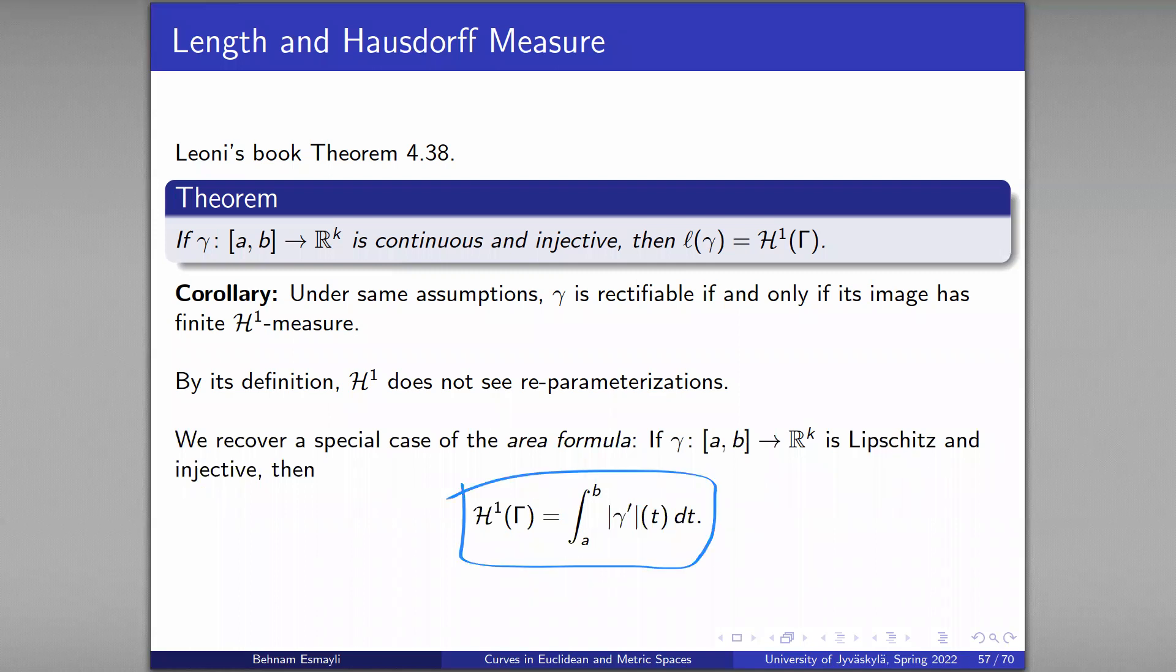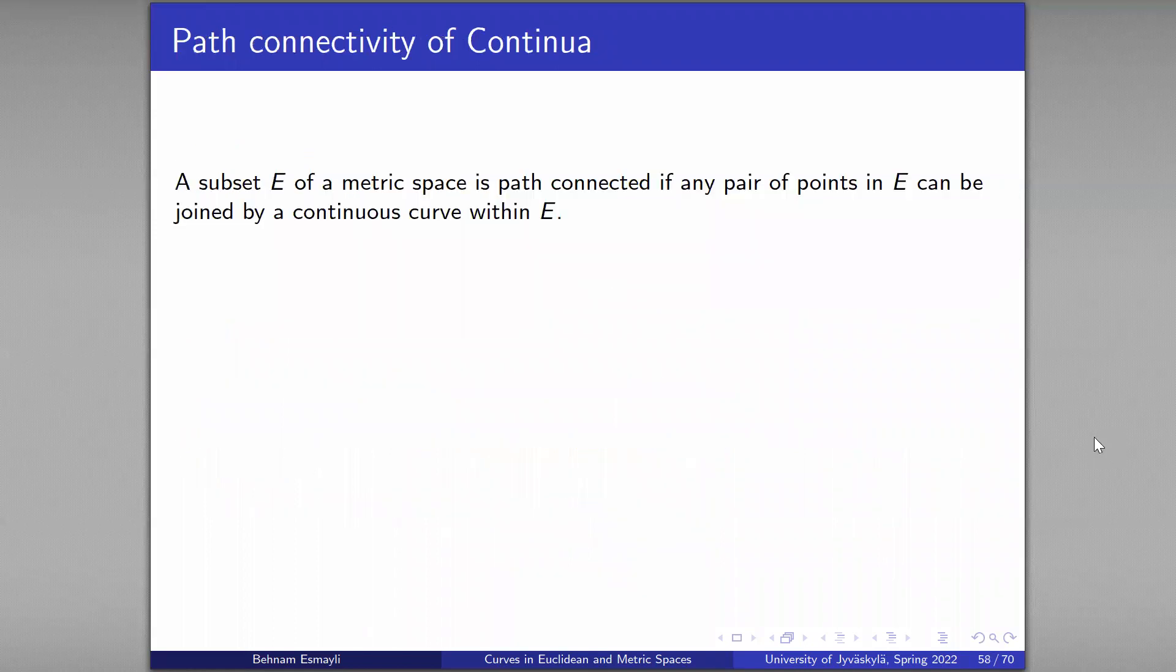And my next video will go over a generalization of this, not only for non-injective but also for maps that go into metric spaces. Already this theorem is true for metric space targets, but its proof is not trivial. The proof in Leone's book is dependent on the structure of Euclidean space. So I didn't want to give this theorem in metric setting. But anyway, this says you can recover the H^1 measure of the image of a curve by integrating its speed. This is an intrinsic object, and on the other hand we have the parameterization.